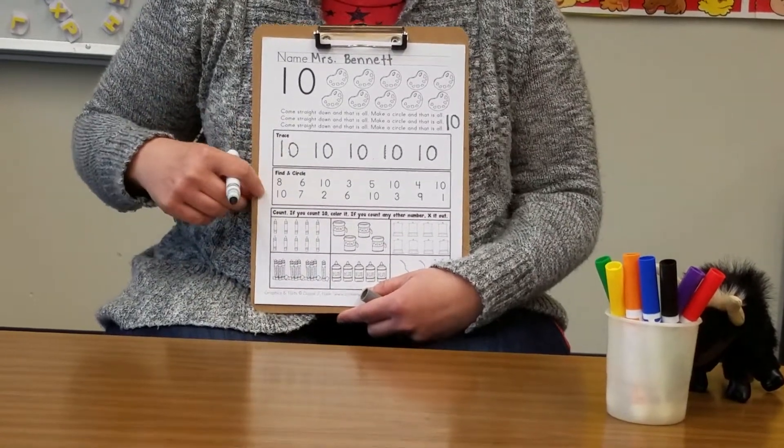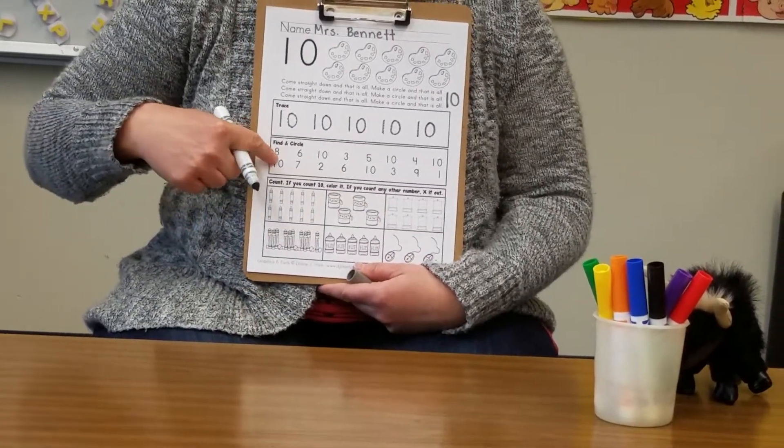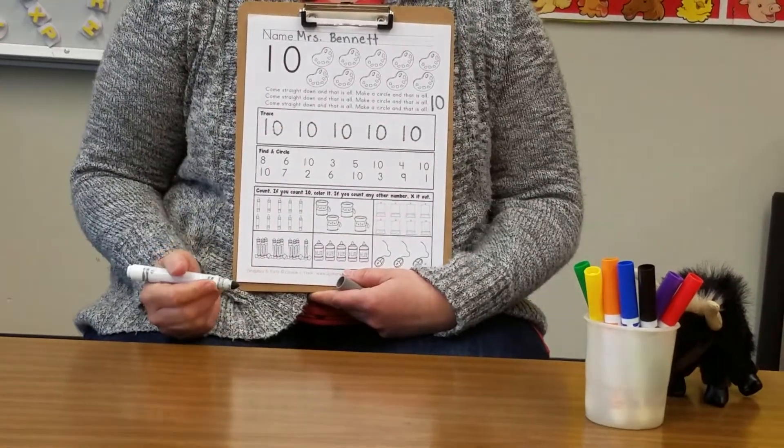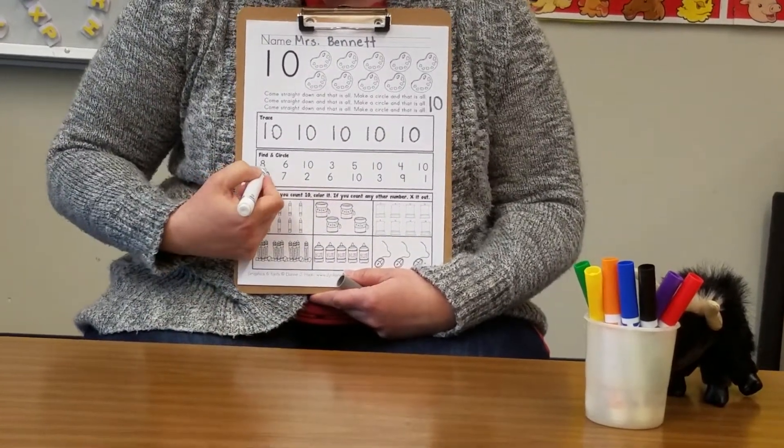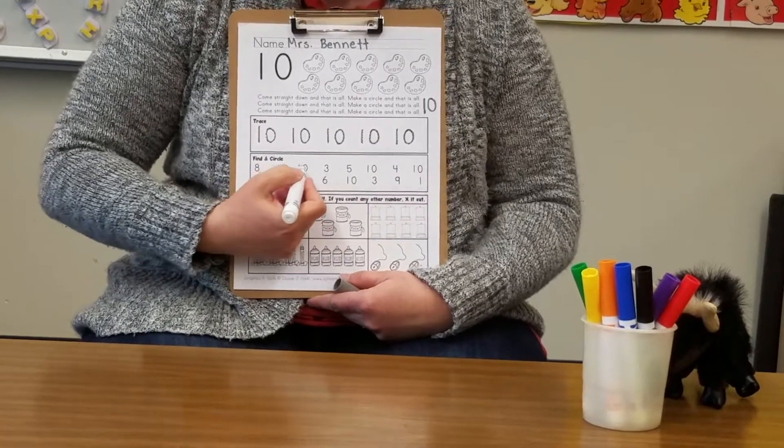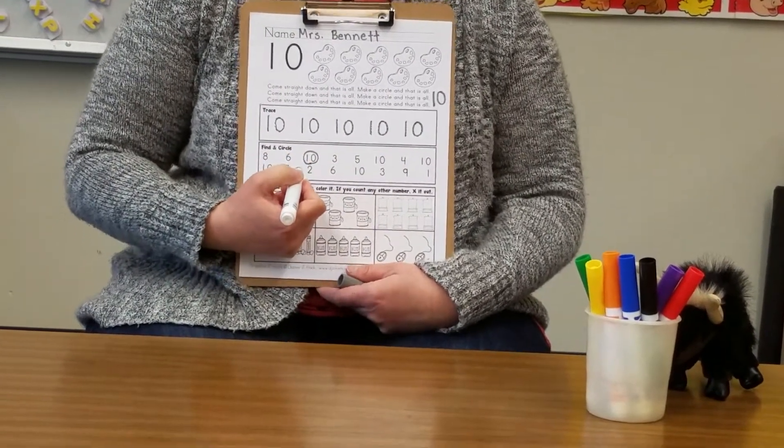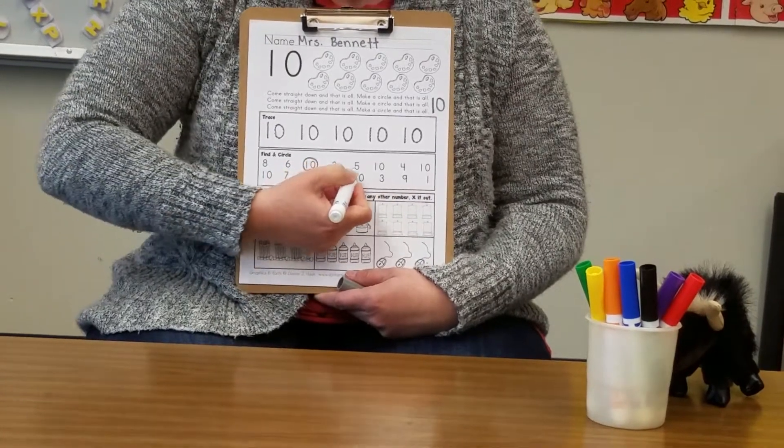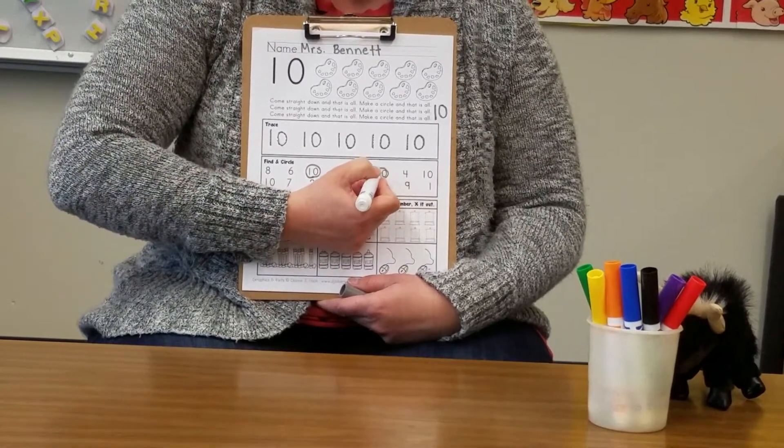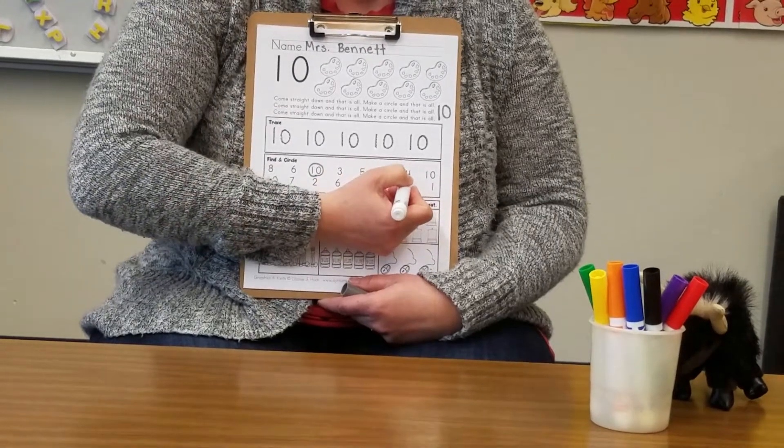Now that we've written all of our number 10s we're going to go down into this box, find the number 10s and circle them. Here we go. I'm going to look at each number and if it's a number 10 I'm going to circle it. If it's not a number 10 I'm going to do nothing and move on. Go ahead and circle the number 10s on your paper.